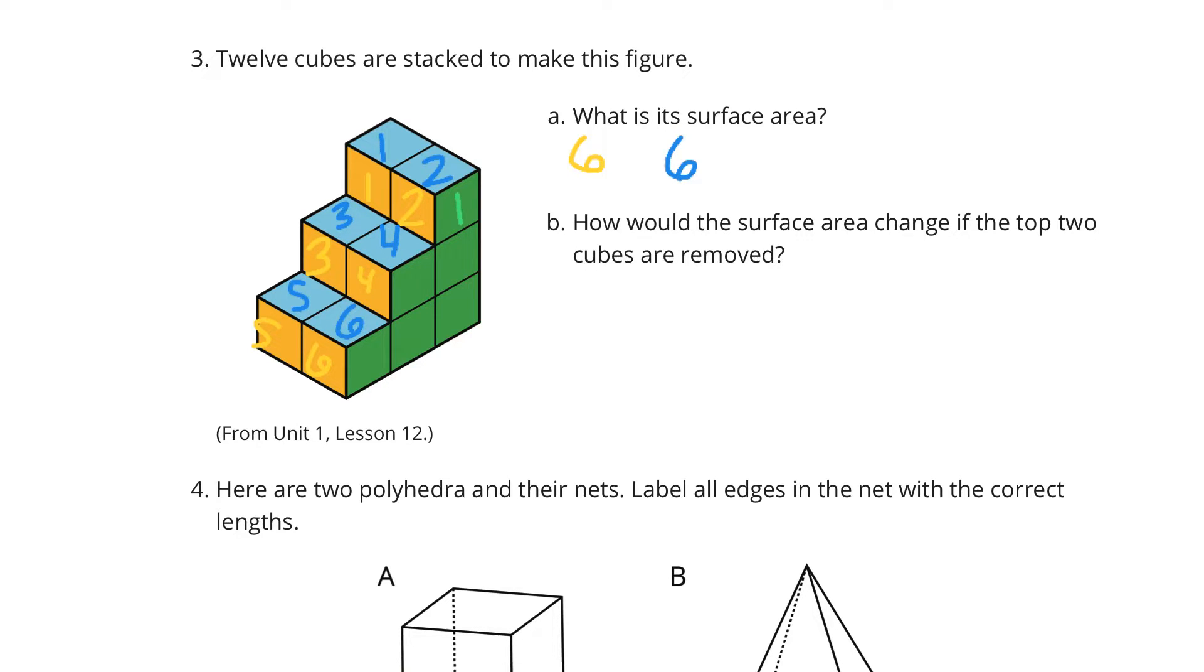And the green, 1, 2, 3, 4, 5, 6. Now, I'm going to add these up. 6 plus 6 plus 6 is 18. And once again, that's only half of the story. If I double that, we're going to end up with 36 square units.